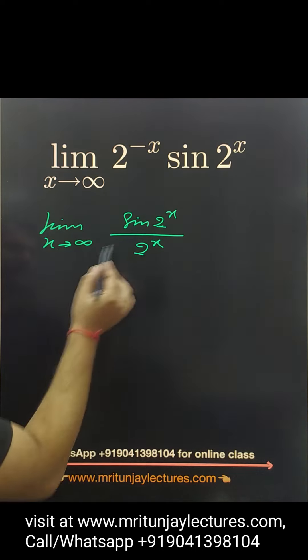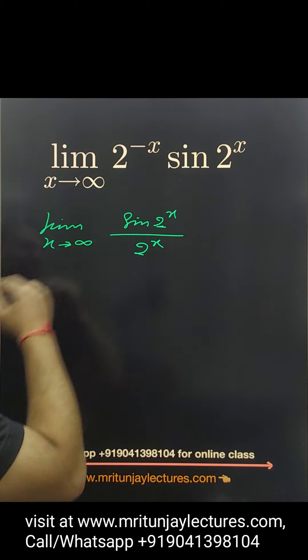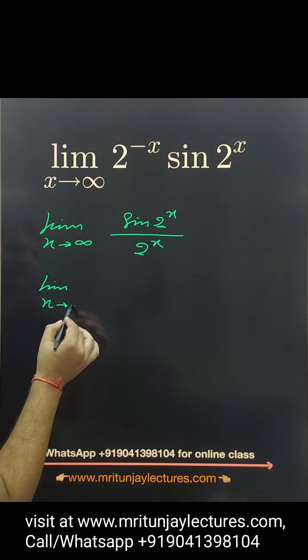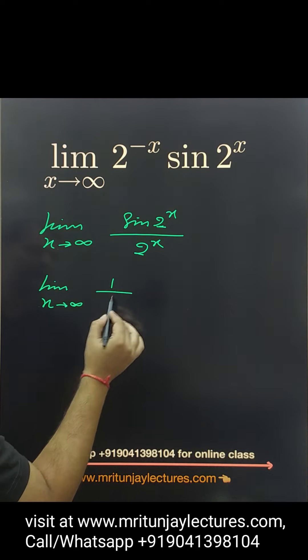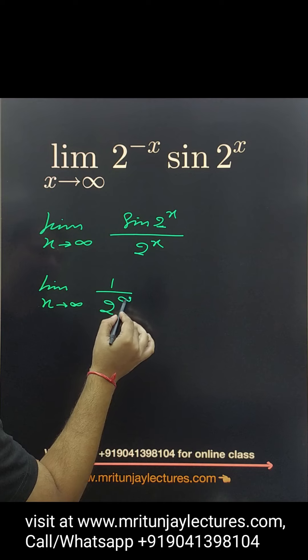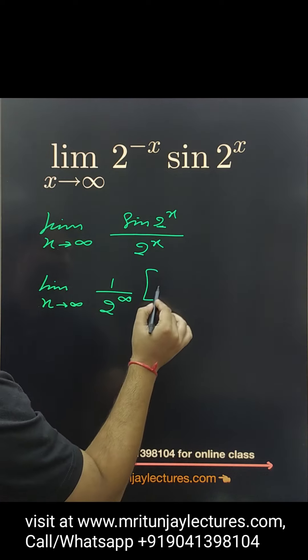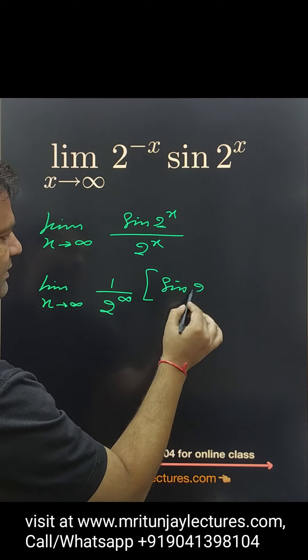If we put x equal to infinity, then we got how much? This one. If put x tends to infinity, basically written like that one into sin 2 to power infinity.